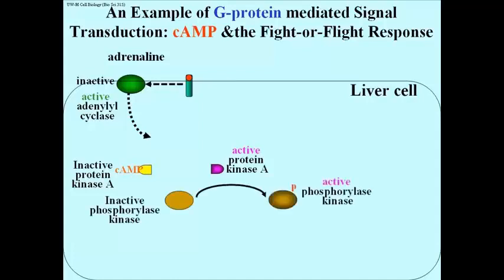The target in this case is called glycogen phosphorylase kinase, because when activated, it will catalyze phosphate transfer from an ATP to an inactive enzyme called glycogen phosphorylase, shown here.